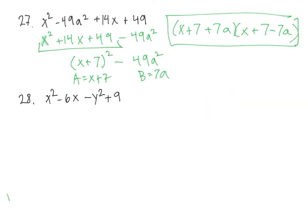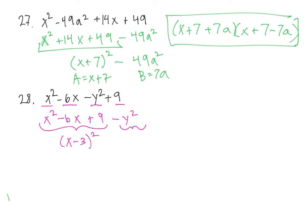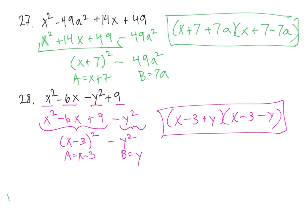Let's do one more practice with those because they are very tricky. I have x squared minus 6x minus y squared plus 9. If I switch the 9 and the y squared, hopefully you can see now we have a perfect square and then an individual term. So if I factor the perfect square, we get x minus 3 squared minus y squared. So my a is x minus 3 and my b is y. So we have x minus 3 plus y, x minus 3 minus y. Two of the problems we had to rearrange. Usually you won't have to rearrange too much, but this is how you do the problem when factoring by grouping going 3 to 1.